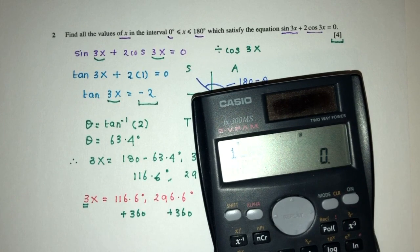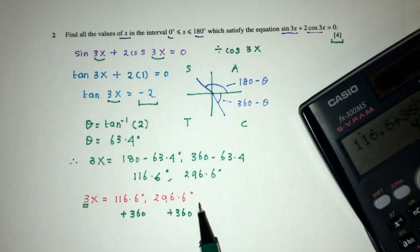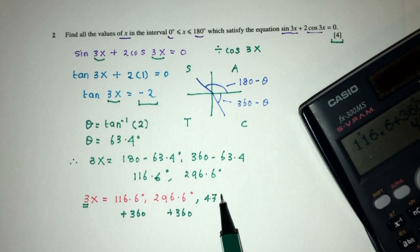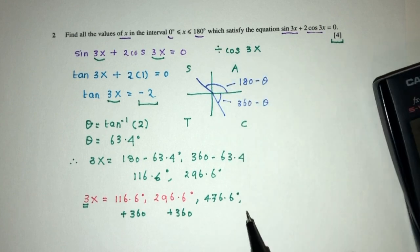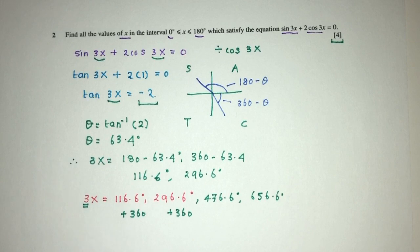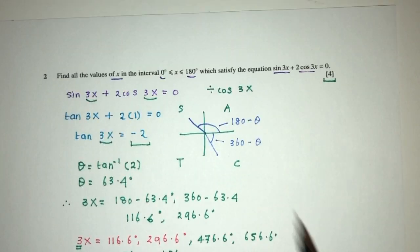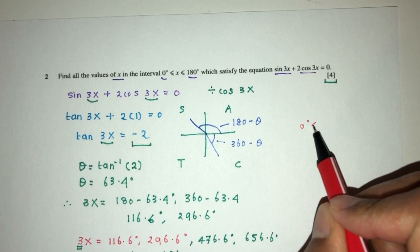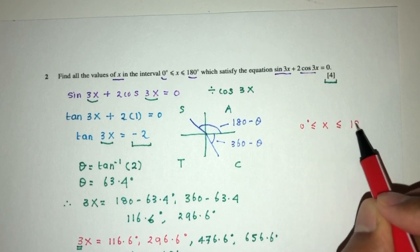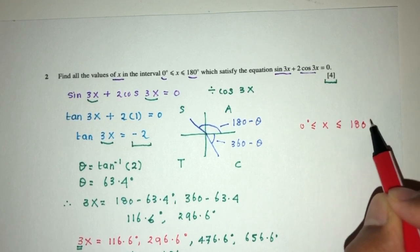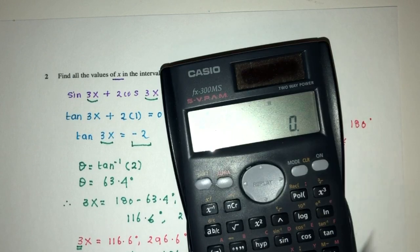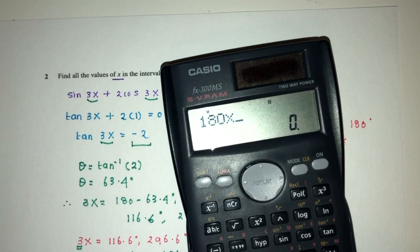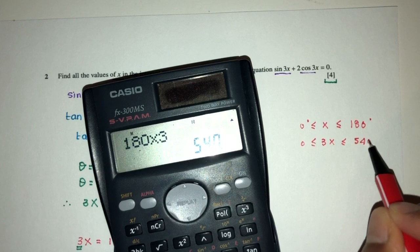Let's check. So 116.6 plus 360, that will be 476.6. 296.6 plus 360, that will be 656.6. Now, another way to look at this is, let's go have a look at the interval. So we know the interval is, x have to be between 0 and 180, but here we have 3x. So 3x have to be between 0 and then 180 times 3, that will be 540.